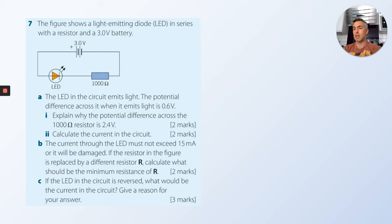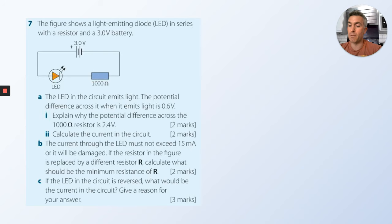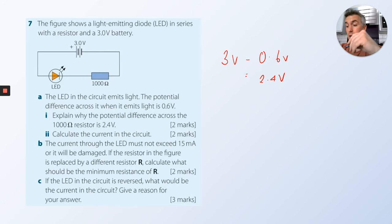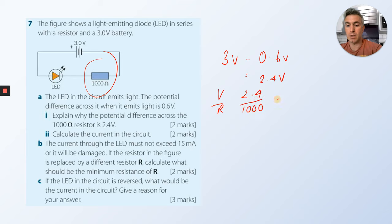The figure shows a light emitting diode LED in series with a resistor and a 3 volt battery. The LED emits light; the potential difference across it is 1.6 volts. The potential difference across the 1000 ohm resistor is 2.4 volts because 3 minus 1.6 equals 2.4 volts. The current: using V over R, 2.4 divided by 1000 gives 0.0024 amps.